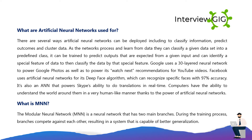What are artificial neural networks used for? ANNs can be deployed to classify information, predict outcomes, and cluster data. As networks process and learn from data, they can classify a given dataset into a predefined class, predict expected outputs from a given input, and identify special features to classify data by. Google uses a 30-layered neural network to power Google Photos and its watch-next recommendations for YouTube. Facebook uses ANNs for its DeepFace algorithm, which recognizes specific faces with 97% accuracy. ANNs also power Skype's ability to do real-time translations.